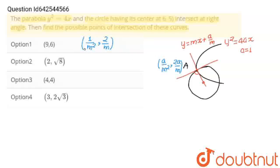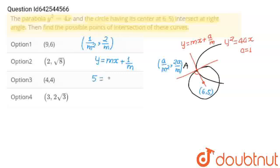Now we have to find m. If we find the slope m of this tangent, we can substitute it to get the point of intersection of this curve. The equation of tangent on the parabola is y = mx + 1/m, with a = 1. Since this tangent on the parabola is normal to the circle, and the center of the circle is (6, 5), this tangent will pass through (6, 5). So putting x = 6 and y = 5 in the tangent equation, we get: 5 = 6m + 1/m.